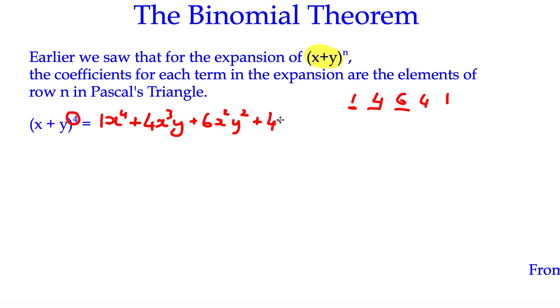The next term is going to be 4x to the power of 1 multiplied by y cubed and the last term is going to be 1 lot of x to the power of 0, which is just 1, multiplied by y to the power of 4, so we just write that as y to the power of 4. You notice that the sum of the powers of x and y in each term is actually still 4. It's a good way of checking to see that you've got it right.